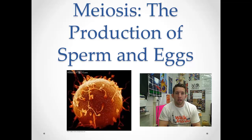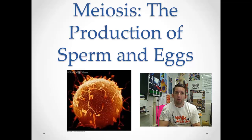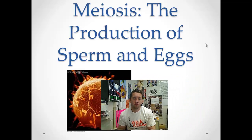Meiosis is essential for sexual reproduction. Mitosis was more asexual reproduction — the somatic cells formed by mitosis are essentially clones of the parent cell. We're moving in a different direction with meiosis. When we're producing these gametes, the gametes are entirely different from the parent germ cell, as we'll see as we trace through the process.